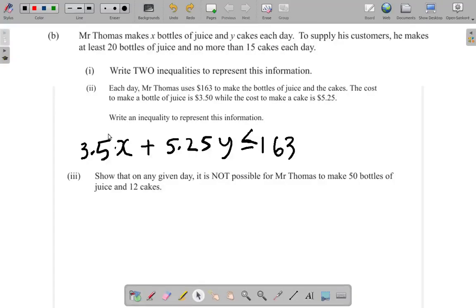Now, for part 3 of this question, show that on any given day, it is not possible for Mr. Thomas to make 50 bottles of juice and 12 cakes. Hmm. Let's see what would happen if he tries to do that.